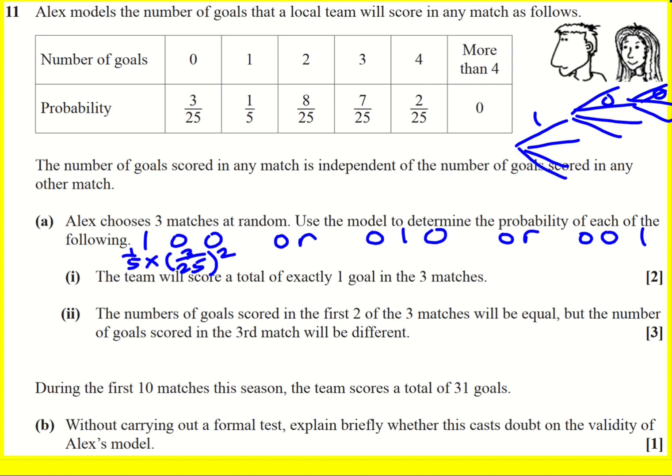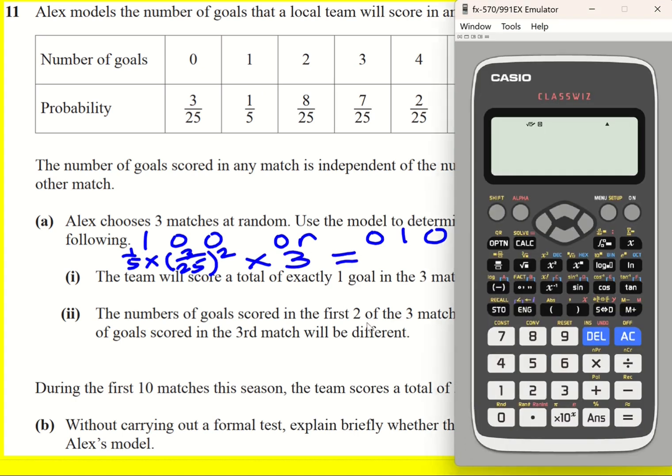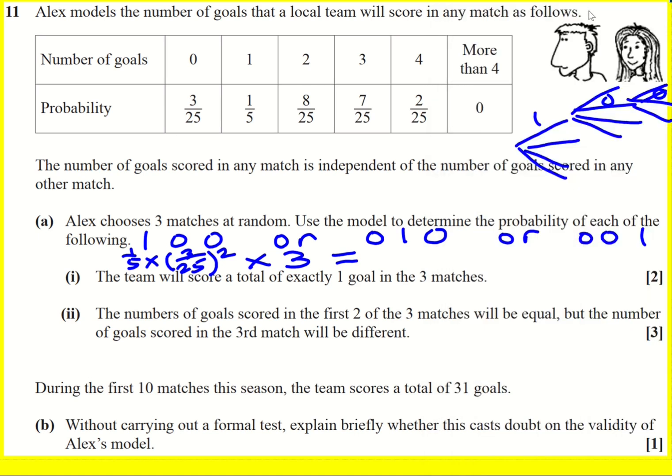And the same for 0, 0, 1, because the probabilities don't change. It would just be 3 over 25 squared times 1 fifth. So what we can do, instead of adding it together three times, is just times by 3. And that is going to be our answer. So a quick way, instead of writing a fraction, is just to write 1 divided by 5. And then put a bracket here, 3 divided by 25 squared times 3. And we get 27 over 3,125.